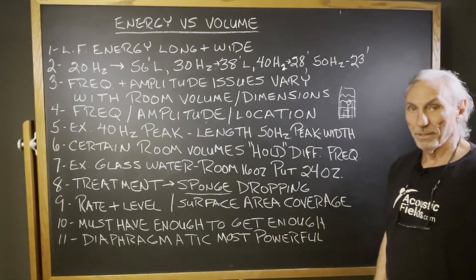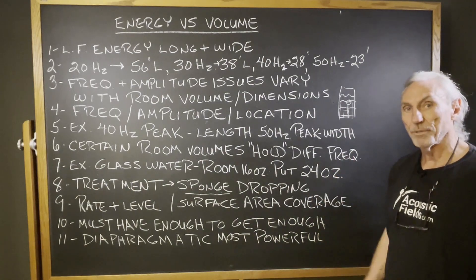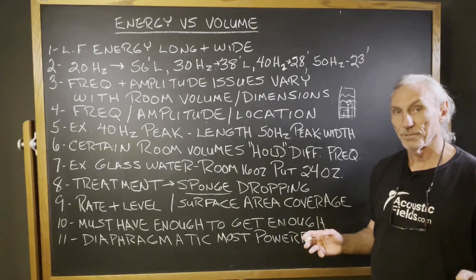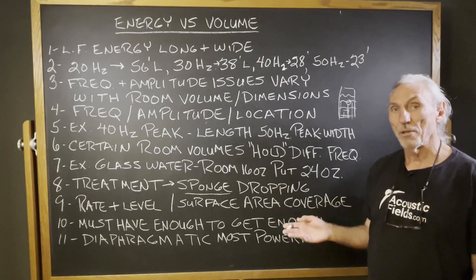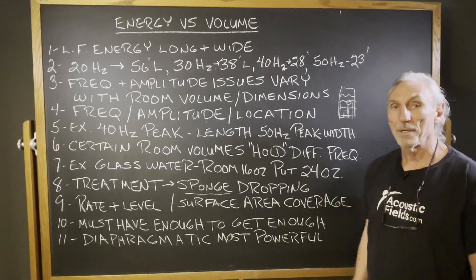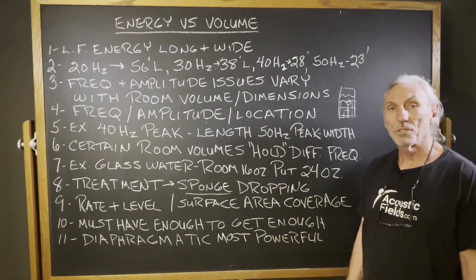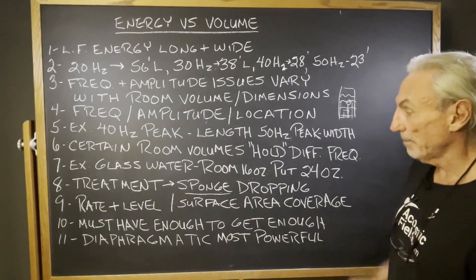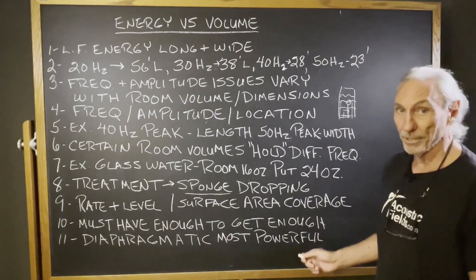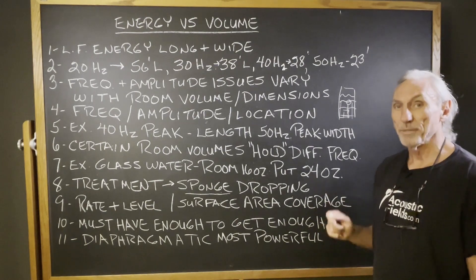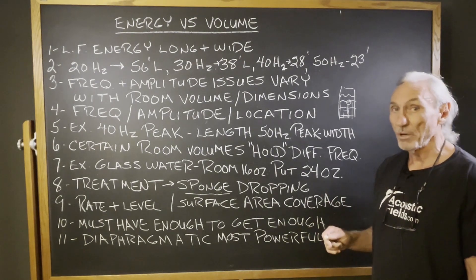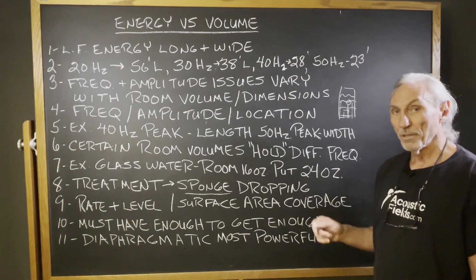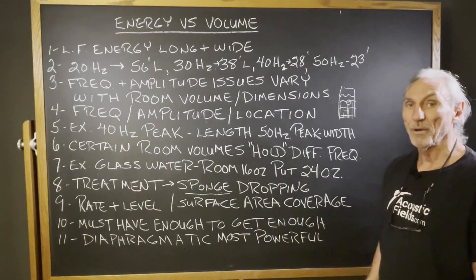Rate and level of treatment is critical. Anybody can build a box and stuff it full of building insulation and get down to 40 cycles, but the key is how much absorption you get per square foot at that 40 cycles. If you fill a room all day long with building insulation, you won't have enough treatment to impact it because the material type simply can't do it — it's cheap but it doesn't work well. So we need the proper rate and level, and we must have enough surface area coverage. Low frequency problems are a nightmare, and we have to treat all surface areas because in small rooms it's usually all surface areas producing the problem — it's very rarely localized just to width, length, or height. It's a blend of everything.